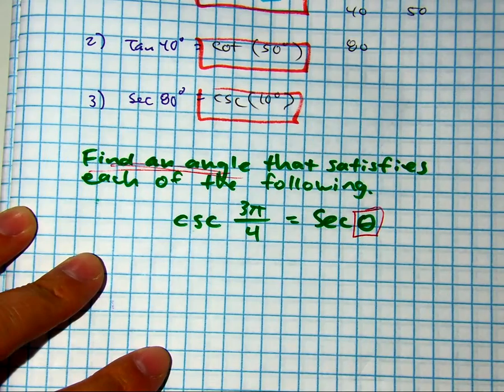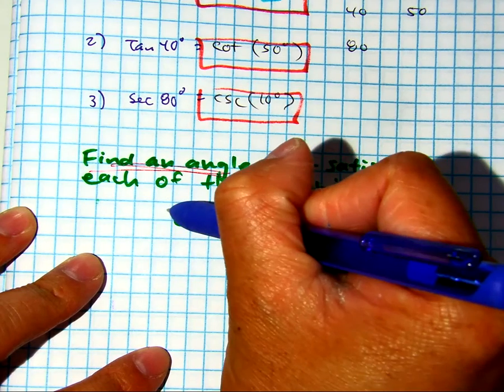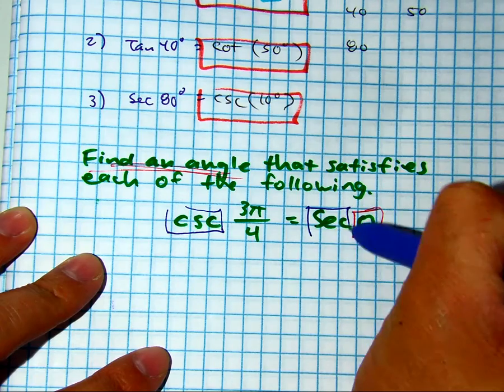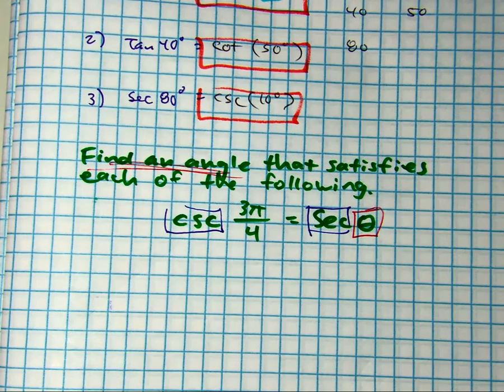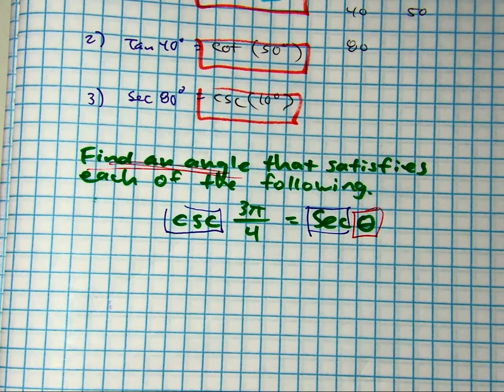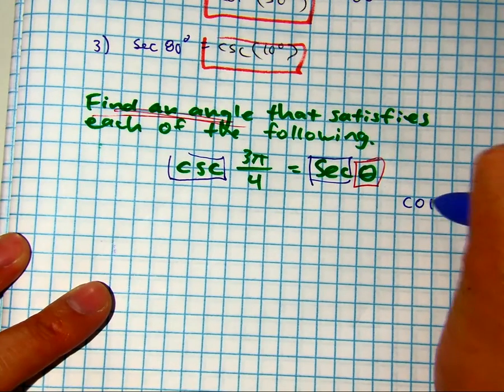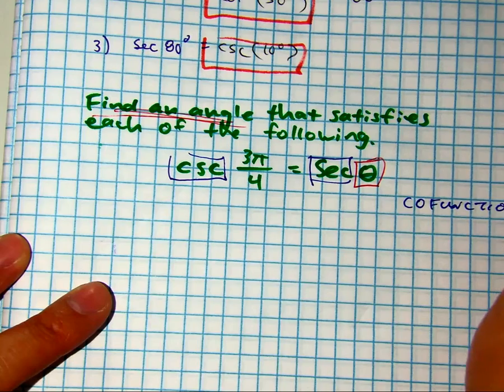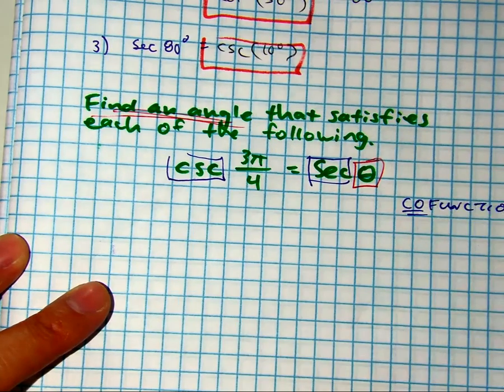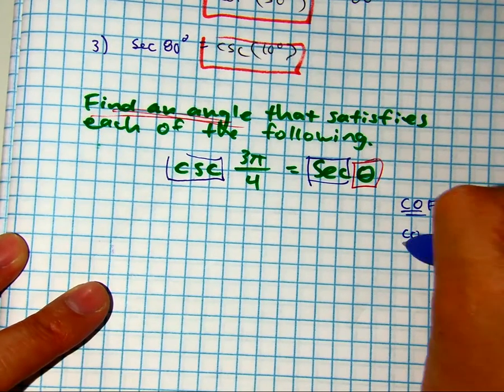It doesn't tell us, but we know something about the relationship between cosecant and secant. Class, what's the relationship between cosecant and secant? They are co-functions. And class, what do you know about co-functions? They are complementary.